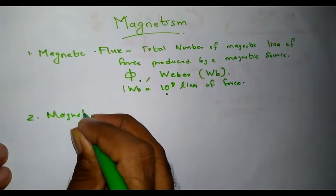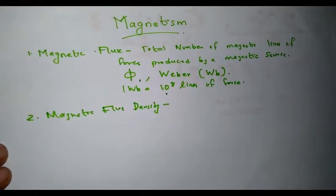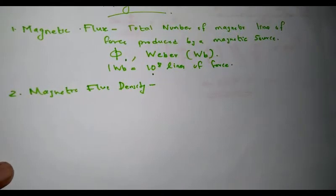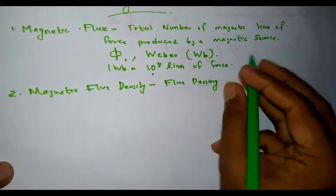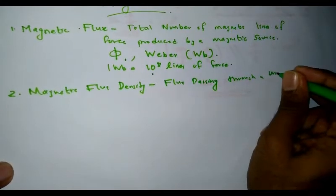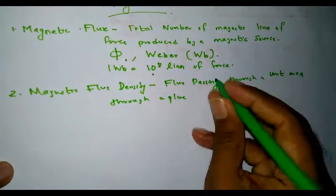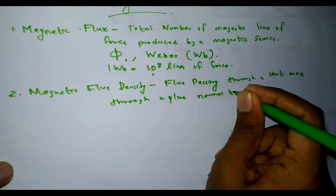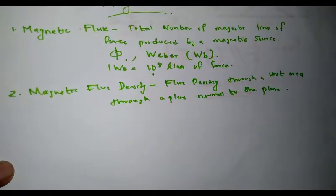Next is magnetic flux density. Magnetic flux density is the flux passing through a unit area through a plane normal to that plane. So magnetic flux density is the flux passing through unit area through a plane perpendicular or normal to the corresponding plane — it is simply flux per unit area.